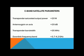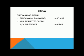C-band satellite parameters: transponder saturated output power 20 W; antenna gain on axis 20 dB; transponder bandwidth 35 MHz; downlink frequency band 3.7 to 4.2 GHz. Signal type is FM TV analog signal with a bandwidth of 30 MHz. The minimum permitted overall carrier-to-noise ratio in the receiver is 9.5 dB.